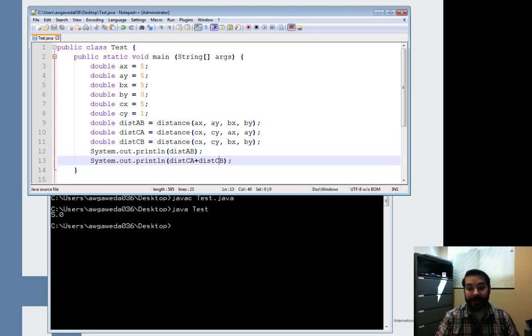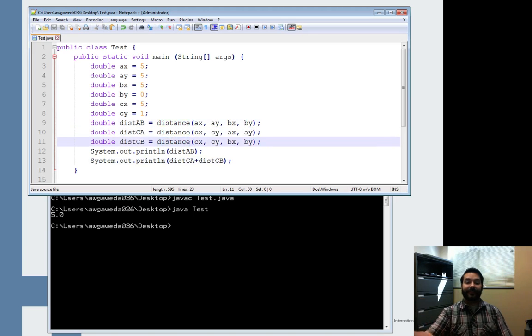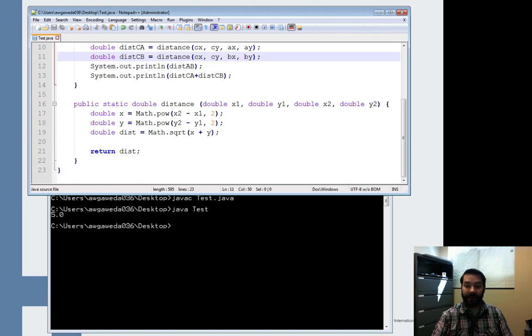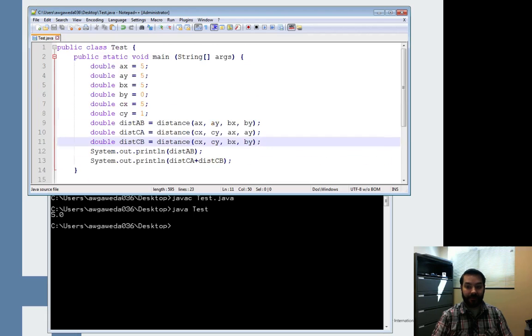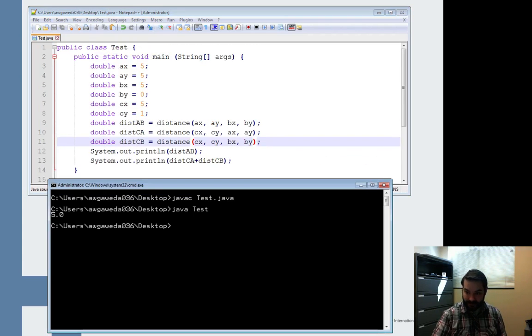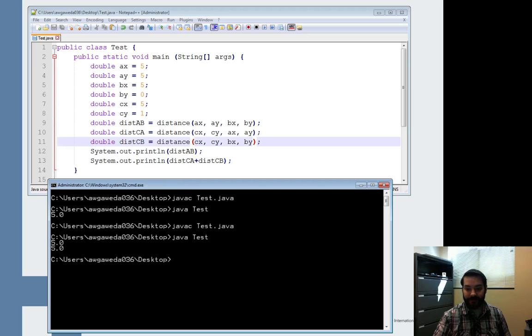Now, the beautiful thing. Look at this. I'm reusing that distance method that we've just created. I only had it set once, and I don't have to worry about it anymore. So let's actually take a look at this now. Java C, compiled perfectly fine. Java test, five, five, collision detected.